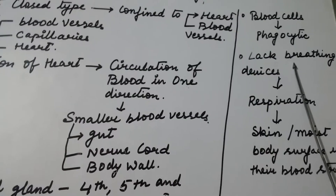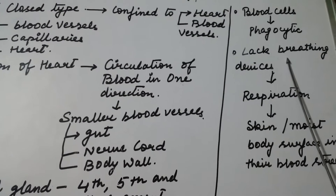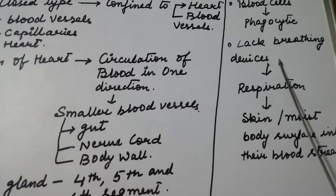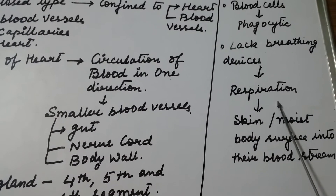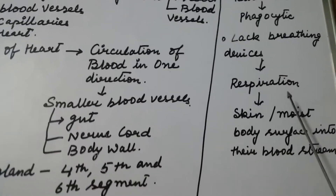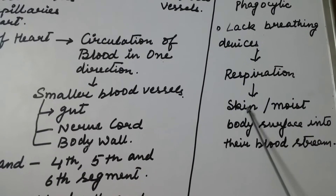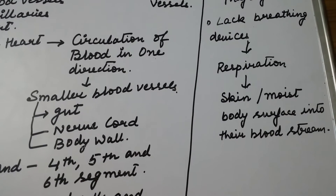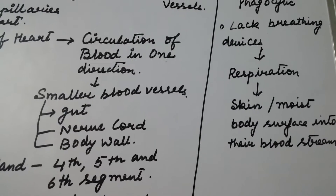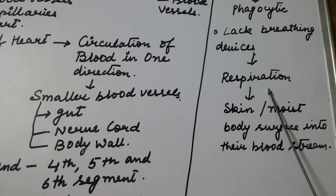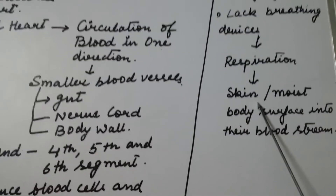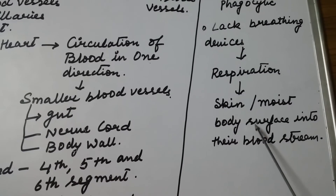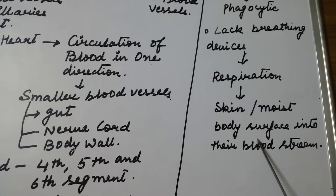As we know, earthworm lacks breathing devices — it does not breathe through any lungs or gills. Instead, respiration in earthworm is exhibited with the help of their moist body surface or skin. This type of respiration is called cutaneous respiration, and the gas exchange occurs through the body surface into the bloodstream.